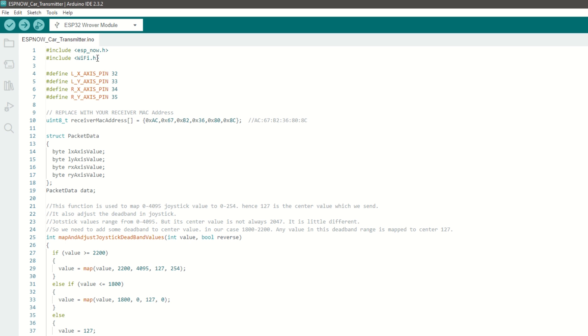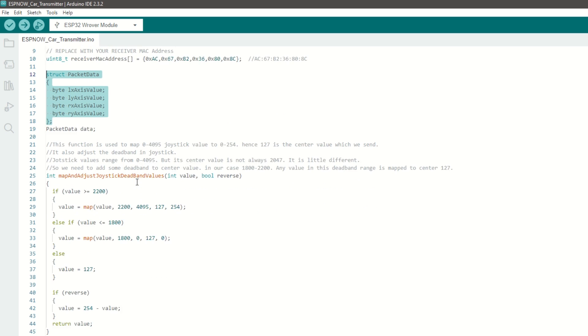Let's take a look at transmitter code now. Inside transmitter code, first we need to include the ESPnow and wifi library. Then we have defined pins for left and right joysticks. Then we have set the receiver mac address as found in previous step. We have defined packet data structure to send the data.